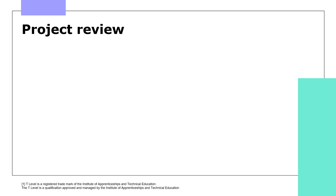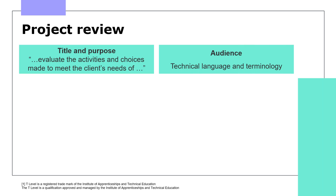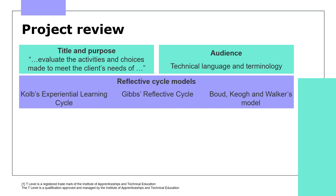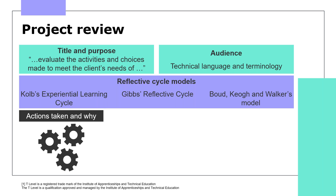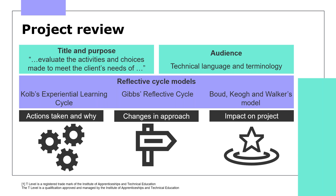For the project review, much like the survey, the inclusion of a purpose can again help ensure that it's focused and relevant to the brief. The audience who will be reading the review should also be considered, with technical terms and language used for a technical audience. Adopting one of the reflective cycles from their learning can aid with the reflective evaluation, and they could use separate headings on their review document to support the model they've chosen. They should ensure they mention the actions they decided to take for each task and why they took that approach, then evaluate and decide if they would amend their approach next time, and how that change would have affected the task outcome and their performance.